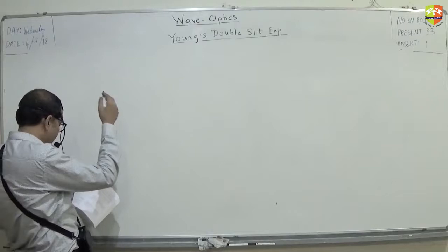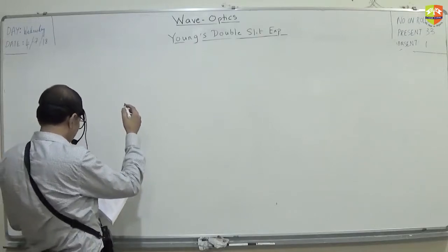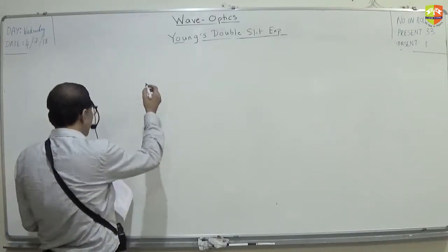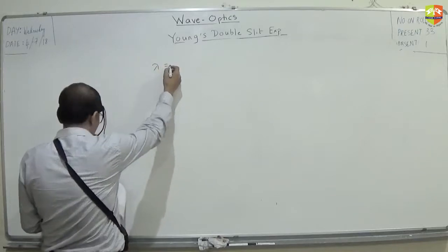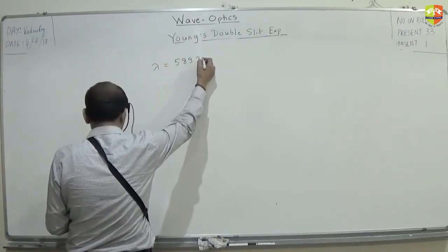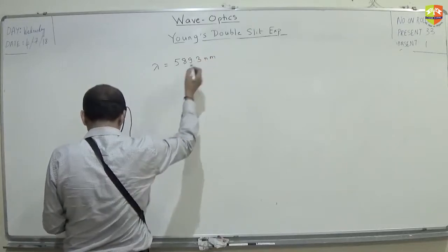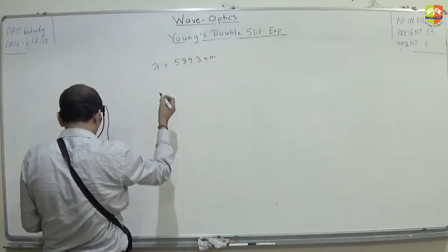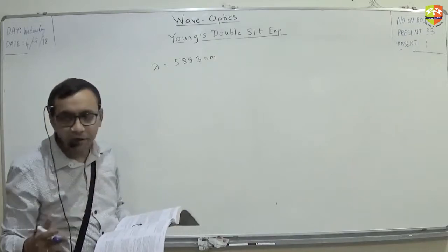Okay, write it down. In Young's double slit experiment that is performed using sodium line of wavelength 589.3 nanometer, the interference pattern is observed on a screen 100 centimeter away.